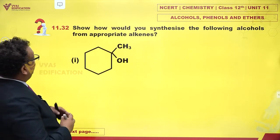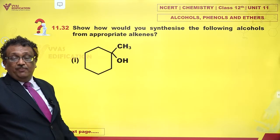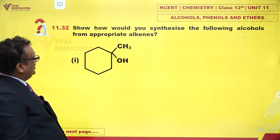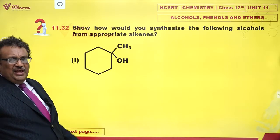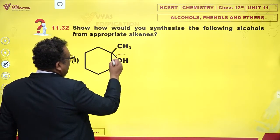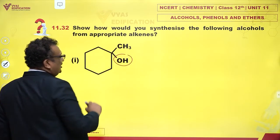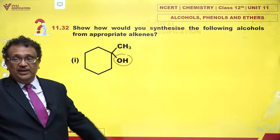So how would you synthesize the following? Alcohols from appropriate alkenes. If this is the alcohol, please understand what is the method of actually getting back to alkenes?